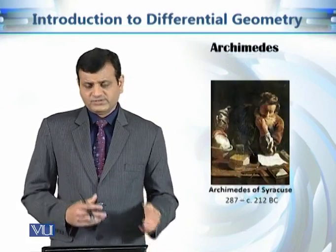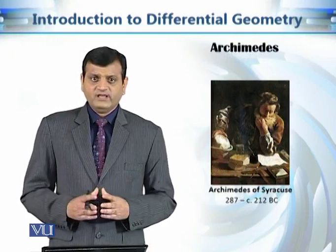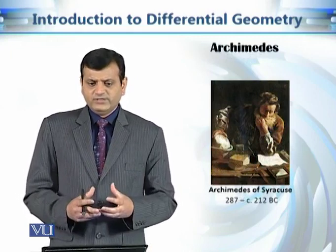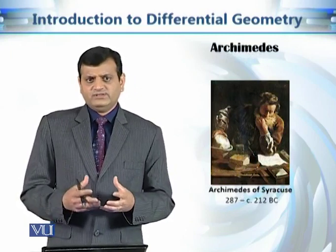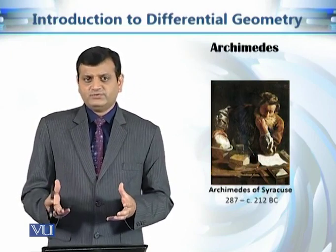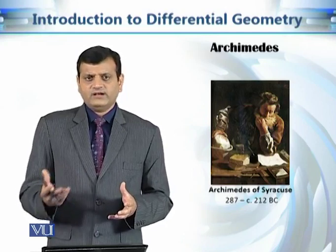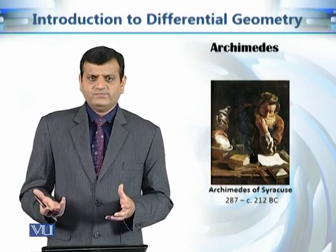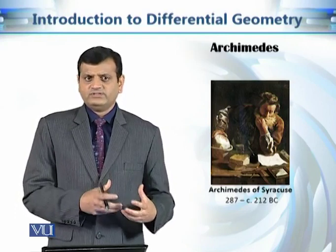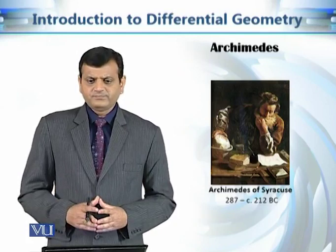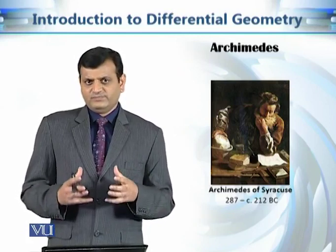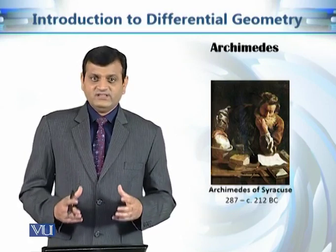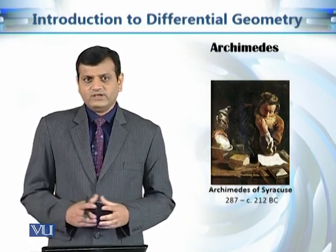The next important name in history is Archimedes. Archimedes calculated volumes of some shapes, and these techniques were then formulated into calculus. Now an undergraduate student can easily calculate the volume of a sphere and surface area of a sphere after the formulation of these techniques in calculus. Archimedes understood geometry to such an extent that he once said, 'Give me a place to stand and I will move the earth.'